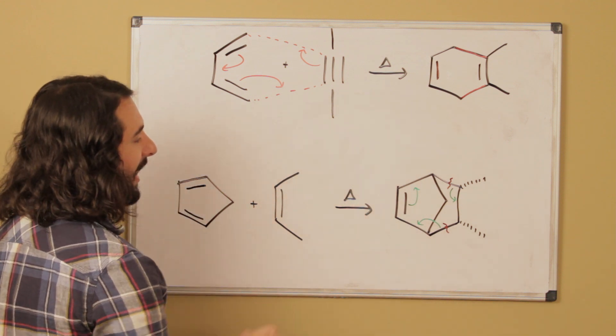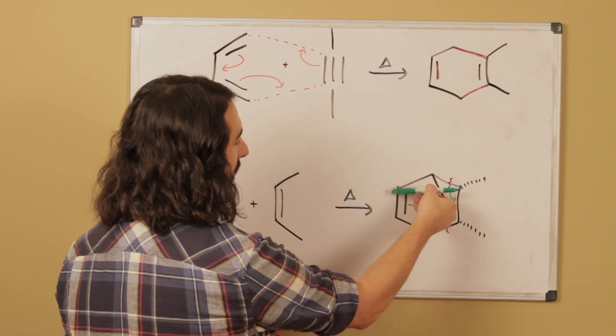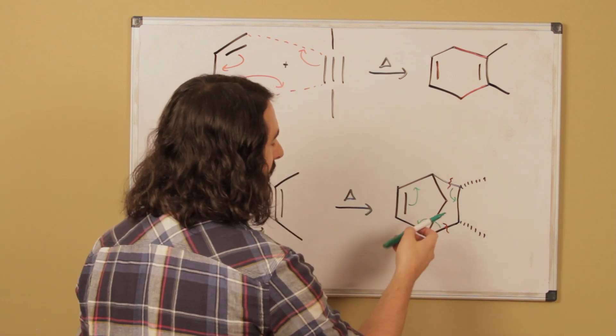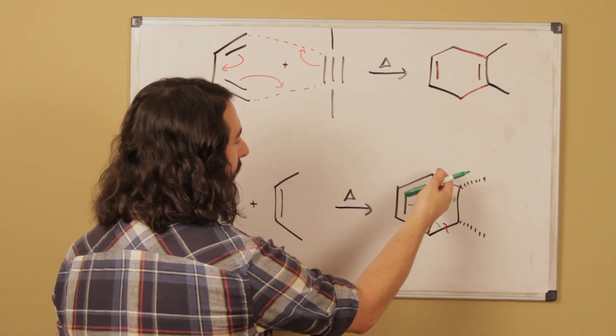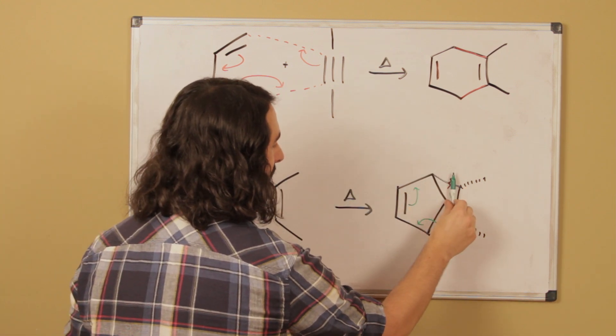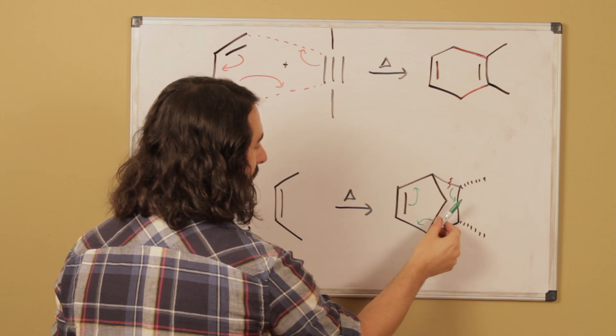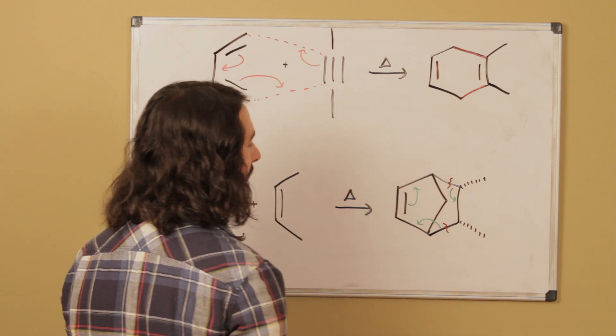And so what we get here is this sigma bond, not literally because this isn't a reaction in the forward direction, but just for our own bookkeeping. We can put this sigma bond down here to generate that pi bond. This sigma bond will break and make a pi bond there and make a pi bond there.